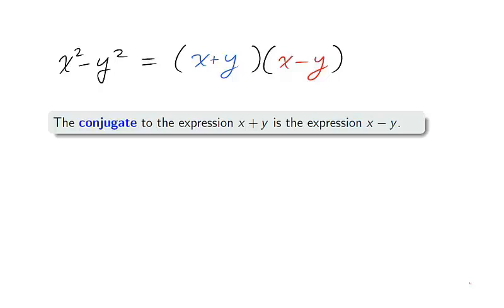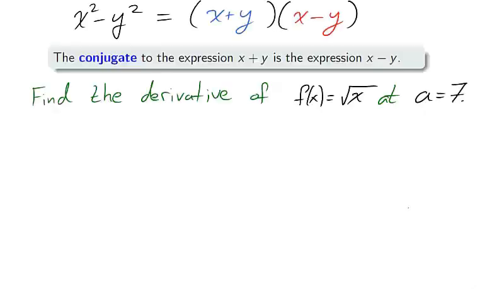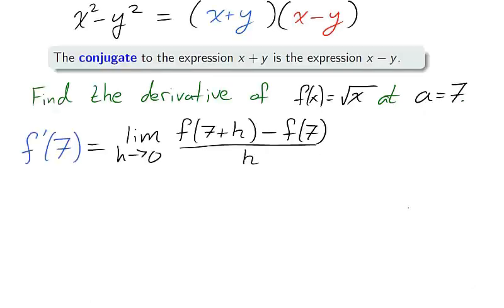Conjugation will prove useful in circumstances where having all elements be squared is useful. In particular, for finding the derivative of a square root, conjugates are necessary. Say we are trying to find the derivative of the square root of x at a equals 7. We'll use the alternative limit definition of the derivative.